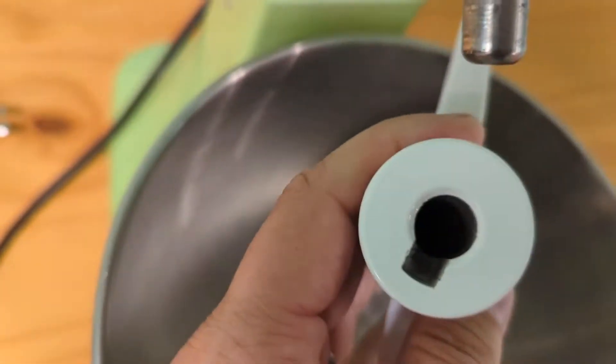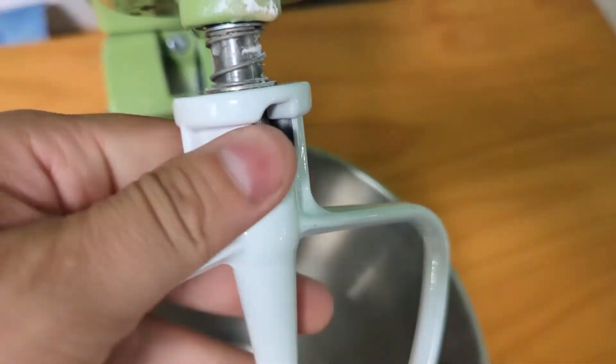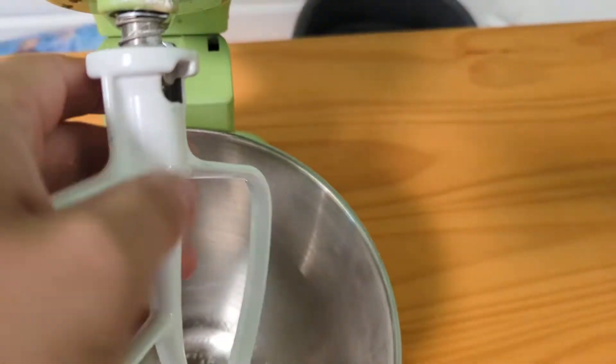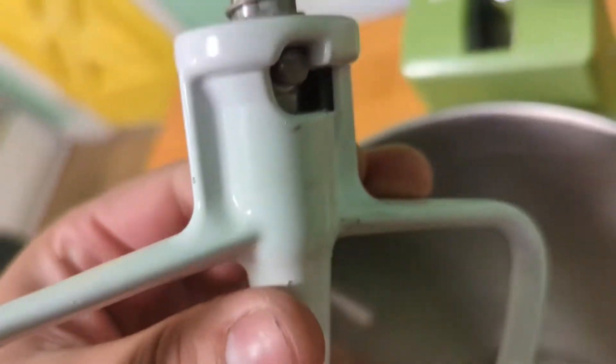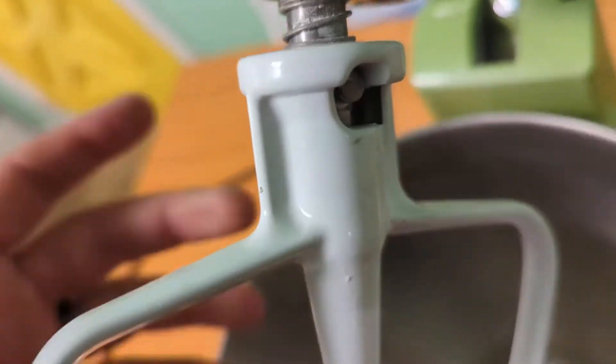You basically line the keyhole up here at the top, comes in and then it's a twist. Hold on. It's there. It's a twist. I'm just going to do this one handed. And then there you go. Now you're keyed in.